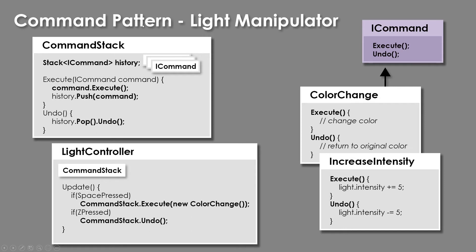In the example we're going to look at, we're going to manipulate a light component using a series of commands. We'll have our iCommand interface and various commands that we can affect the light with — a color change, increase the intensity. We'll keep things really simple. We'll have our light controller, which will have access to a command stack containing the history. We'll say command stack dot execute, and it will run that and track all previous commands. If we press the Z button, we can undo.